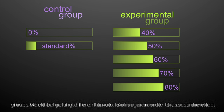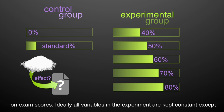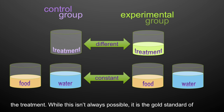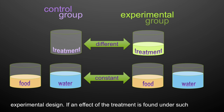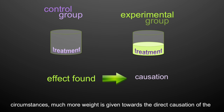In our example, the experimental groups would be getting different amounts of sugar in order to assess the effect on exam scores. Ideally, all variables in the experiment are kept constant except the treatment. While this isn't always possible, it is the gold standard of experimental design. If an effect of the treatment is found under such circumstances, much more weight is given towards the direct causation of the treatment.